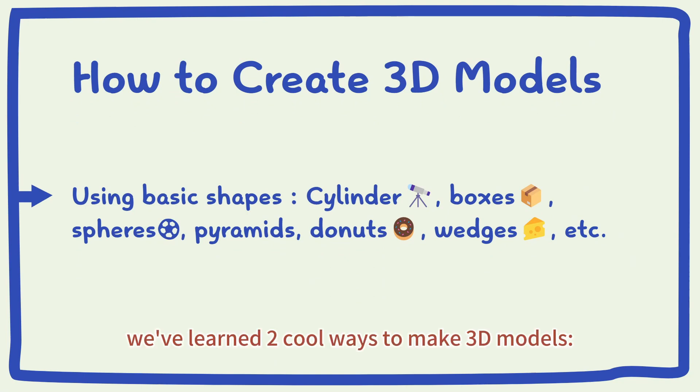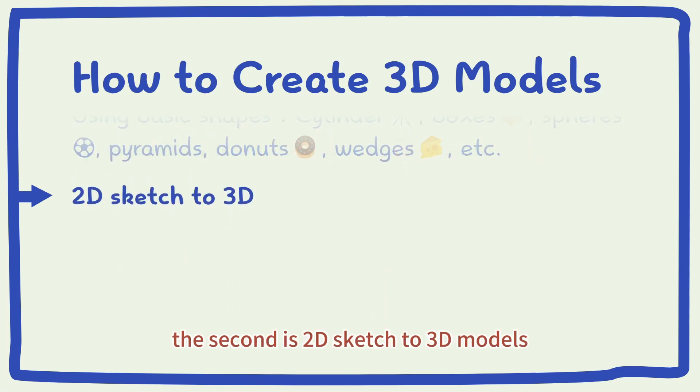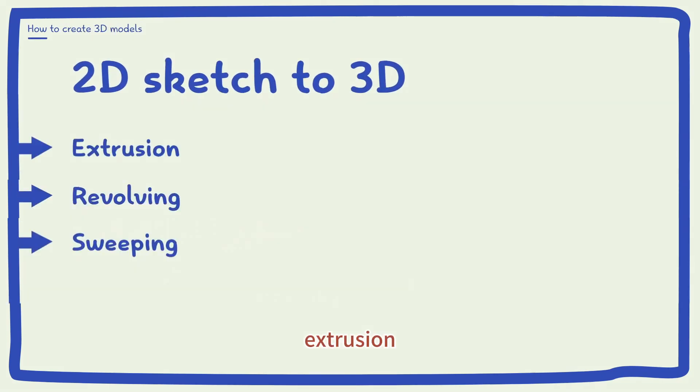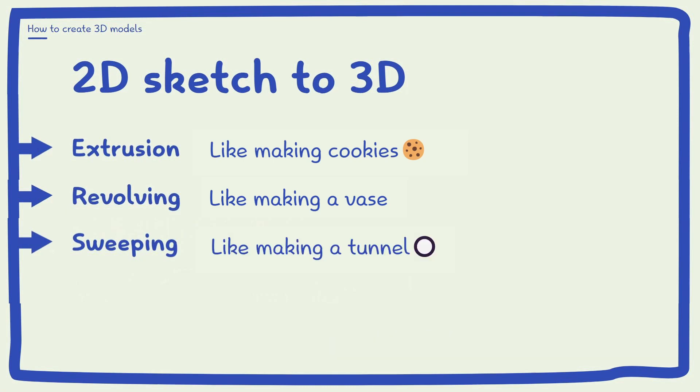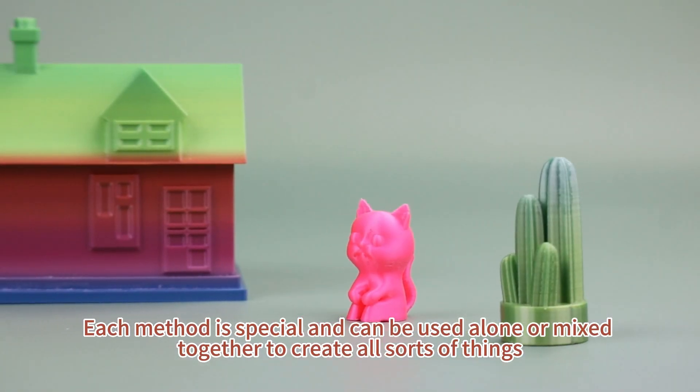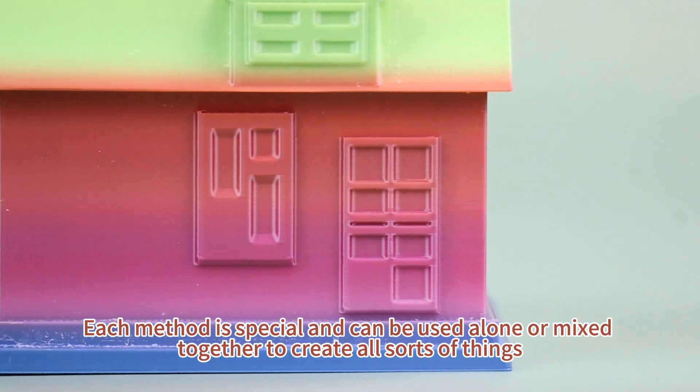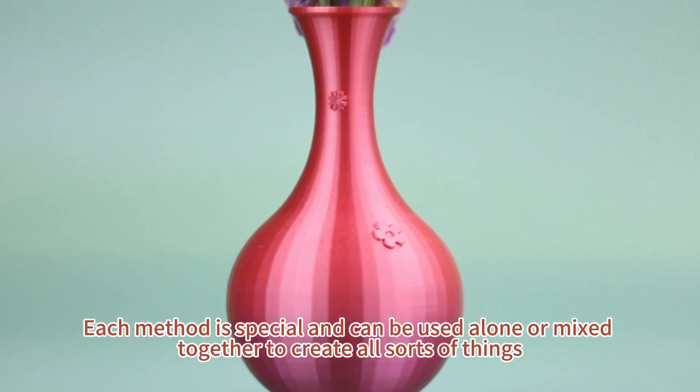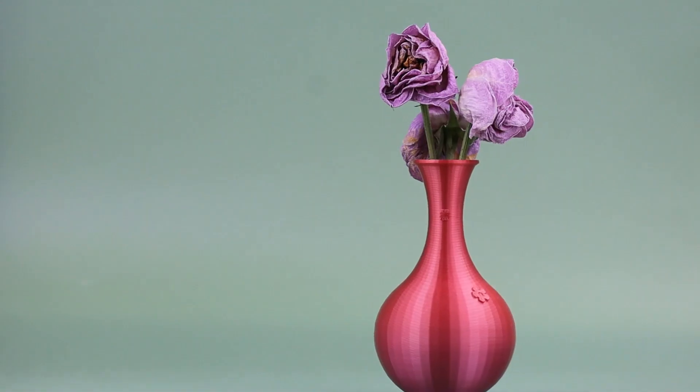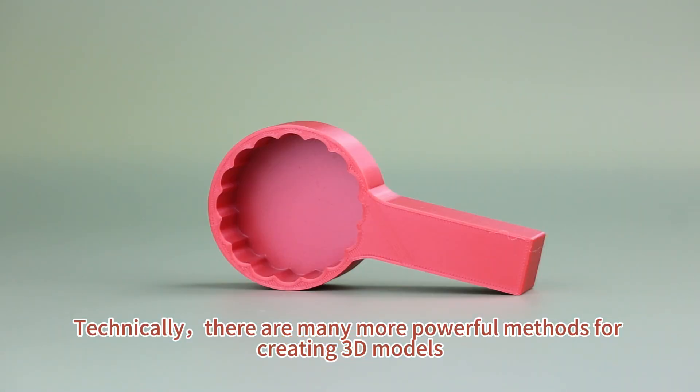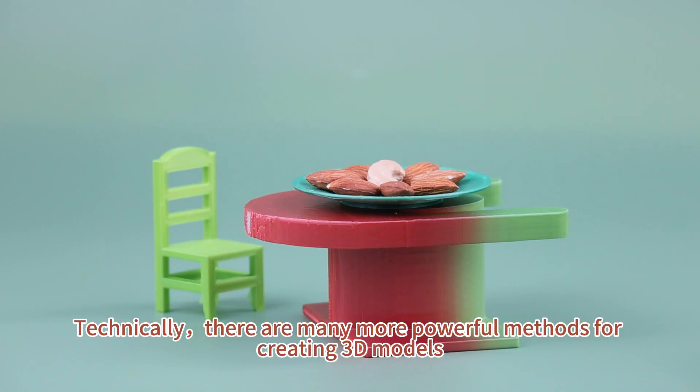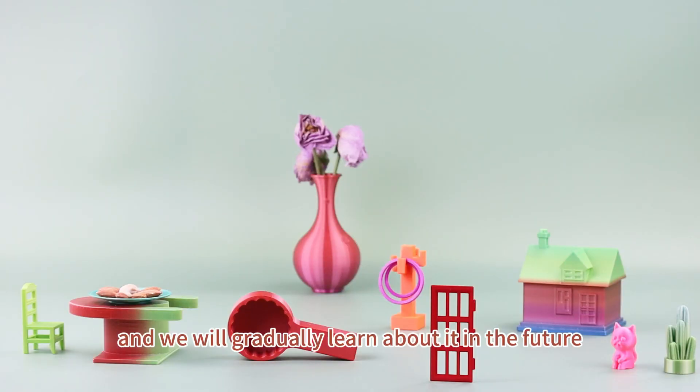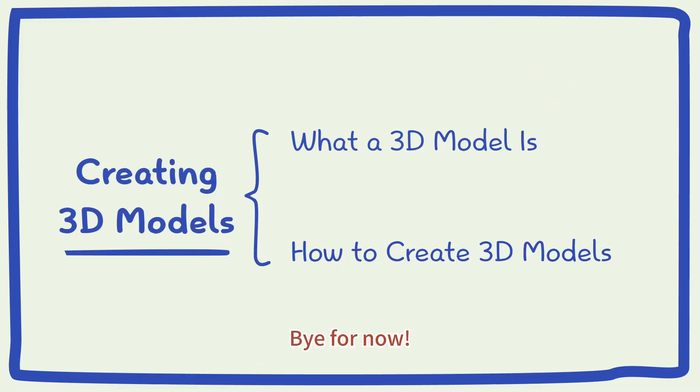So, we've learned two cool ways to make 3D models. The first is using basic shapes. The second is 2D sketch to 3D models: extrusion, revolving, and swiping. Each method is special and can be used alone or mixed together to create all sorts of things. Technically, there are many more powerful methods for creating 3D models, and we will gradually learn about them in the future. Bye for now!